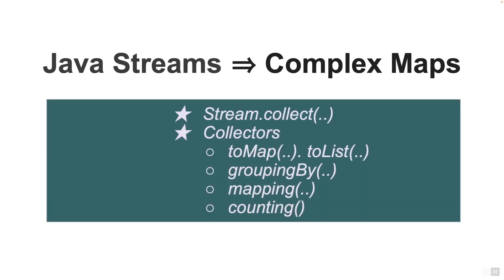Hi friends, today we're going to talk about Java streams and how we're going to convert them into complex Java maps. Why maps? Because a lot of times Java developers convert lists into maps because in their algorithms to look up things very fast, maps are important. So maps become central to many of the algorithms.